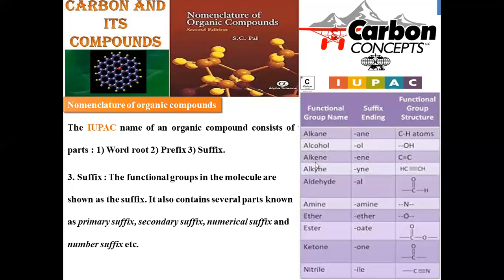If we take any double-bonded organic compound, the suffix must be 'ene' because double bond is designated with 'ene.' So for a two carbon chain: ethene, three carbon: propene, four carbon: butene, five carbon: pentene. Whenever an alkene is present, the ending word will be 'ene.'